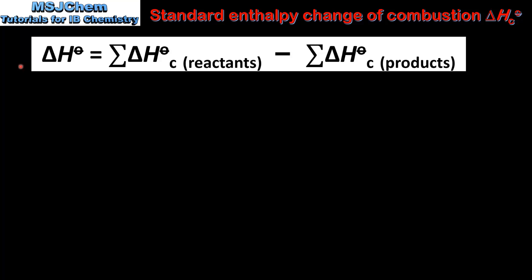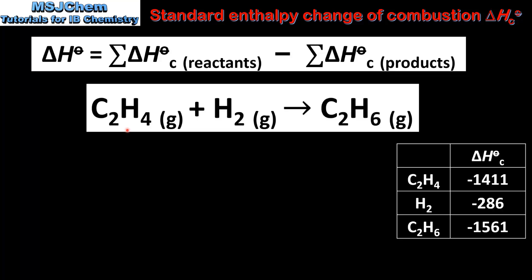Next we look at how to calculate the enthalpy change for a reaction using standard enthalpy change of combustion values. The enthalpy change of a reaction is equal to the sum of the standard enthalpy change of combustion values of the reactants minus the sum of the standard enthalpy change of combustion values of the products.